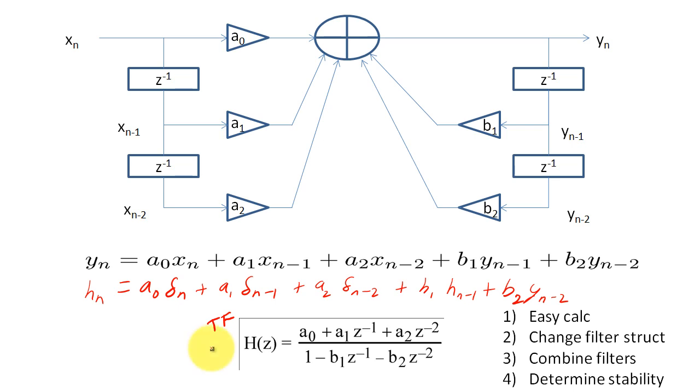So the first reason, if we have h of z, we can find h of n by taking the inverse Z-transform of h of z. Simple enough.